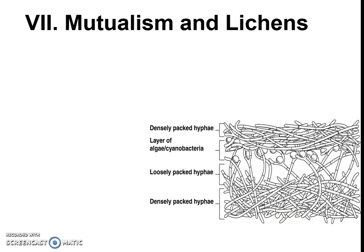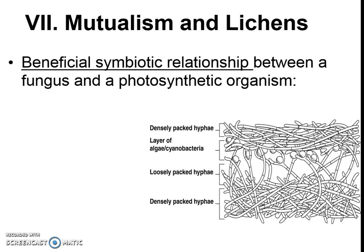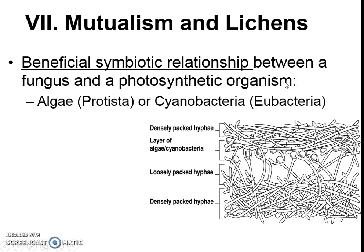Last but not least, even though some fungi have parasitic relationships, there are also some with mutualistic relationships. Mutualism is a beneficial symbiotic relationship. This particular example is called lichen. Lichen is a relationship between fungi and photosynthetic organisms — specifically an algae protist or a cyanobacterium. That autotrophic organism creates a relationship with the hyphae, and the fungus benefits by getting glucose from the photosynthetic organism's photosynthesis.